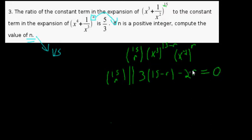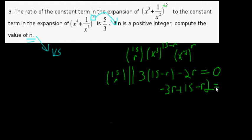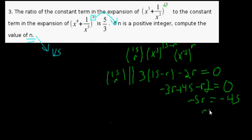Setting that equal to zero and expanding: three times fifteen minus r gives us minus three r plus forty-five, then minus two r. By the commutative property that becomes minus five r equal to minus forty-five, so r is equal to nine.